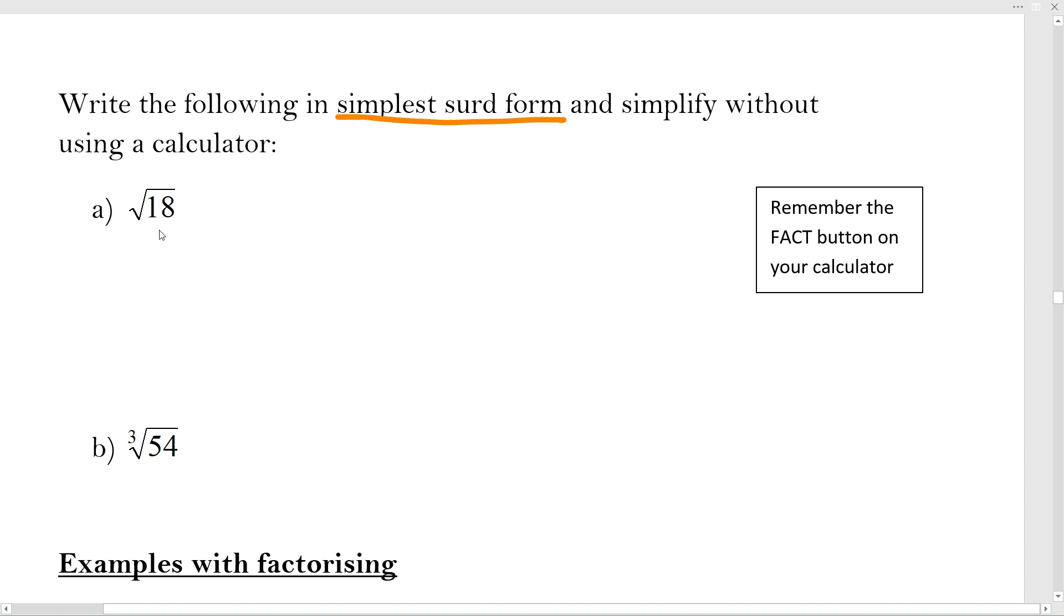Simplest surd form: if you type root 18 into your calculator you're going to get the answer as is, but because you need to show the simplification process without using a calculator, you're going to need to do that. I'm telling you to use the calculator but not to get the simplest surd form. You're going to use the calculator to get prime factors and you're going to do all the rest of the work by yourself.